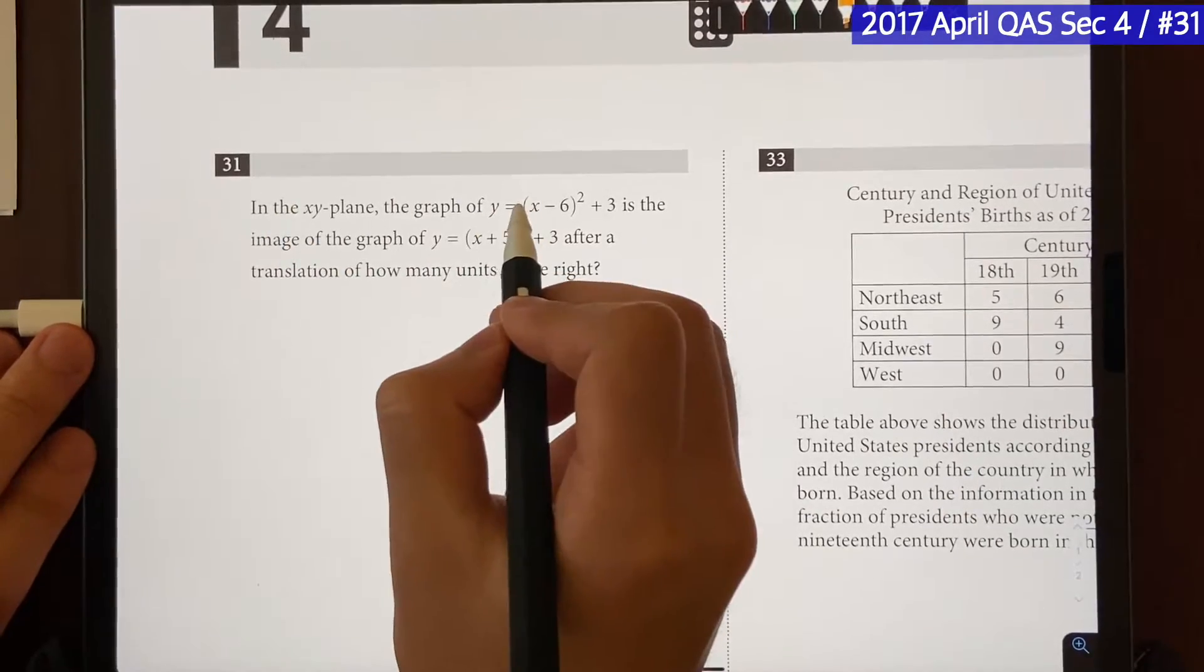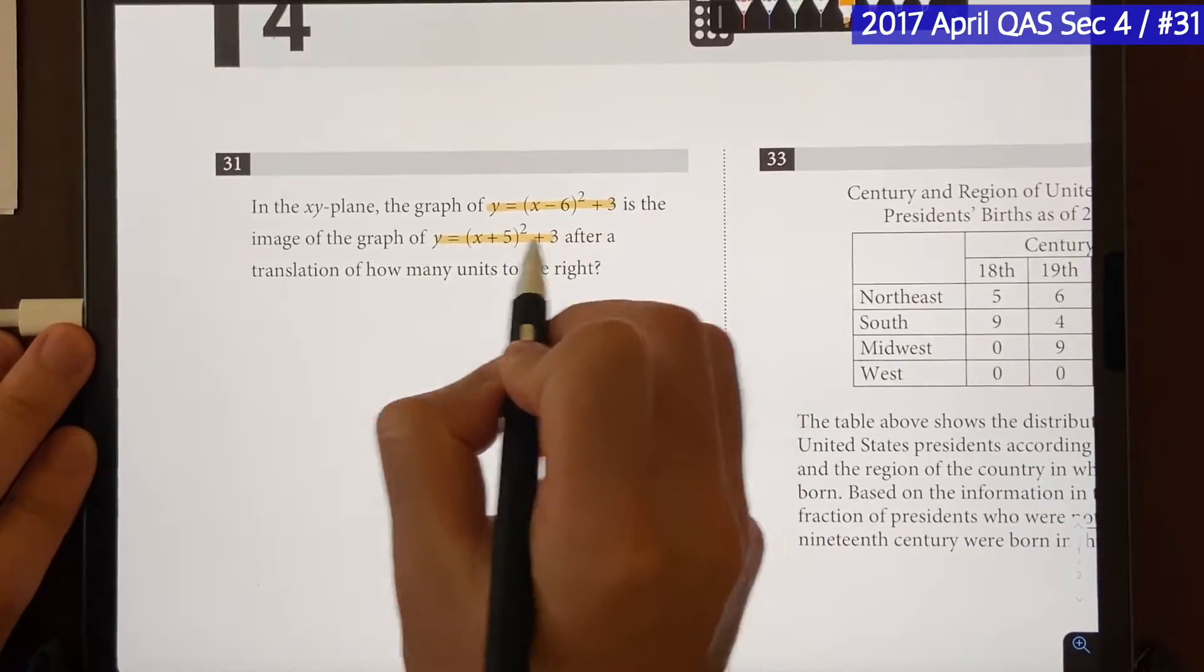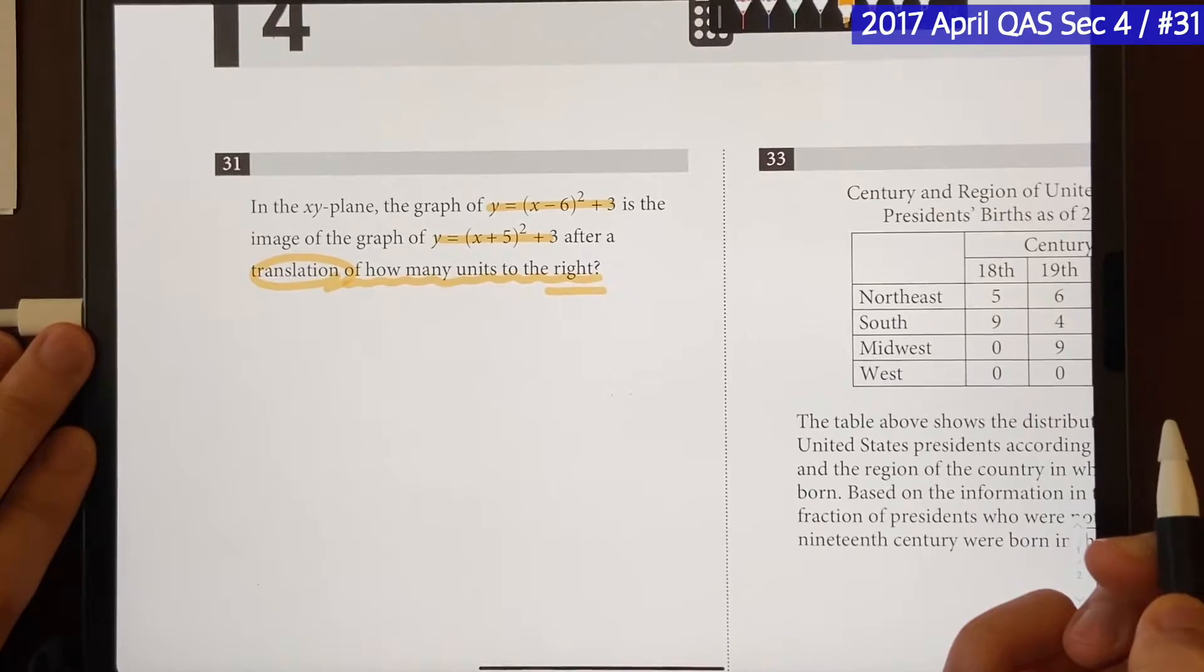So, the question says, in the XY plane, the graph of this is the image of the graph of this after translation of how many units to the right.